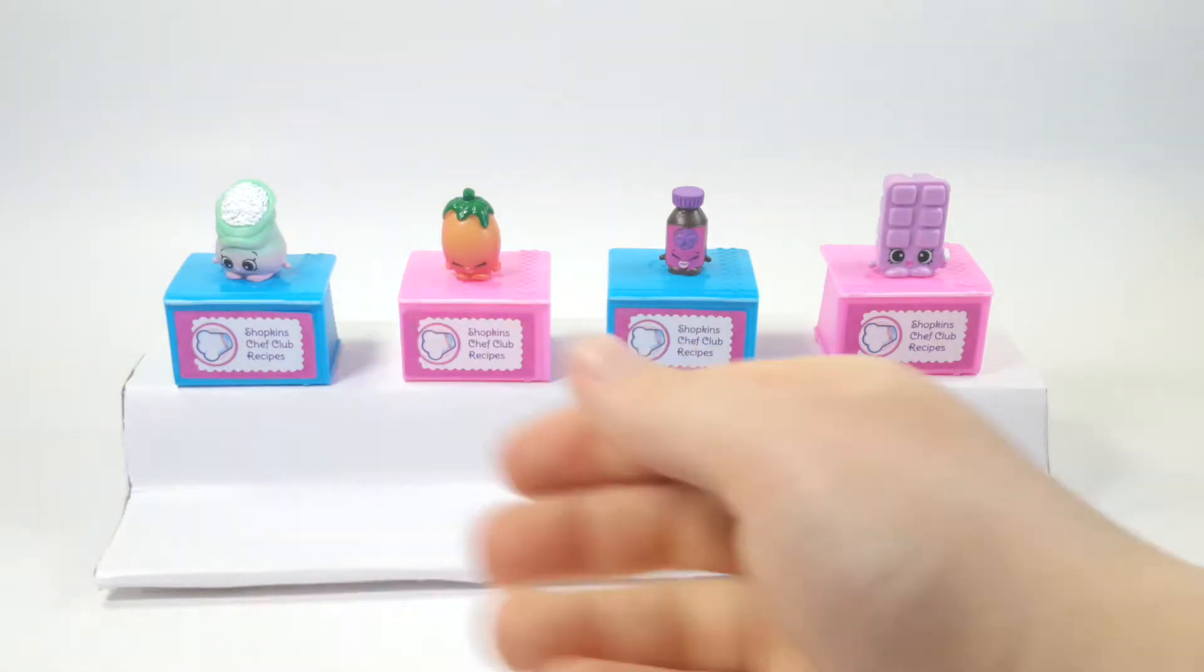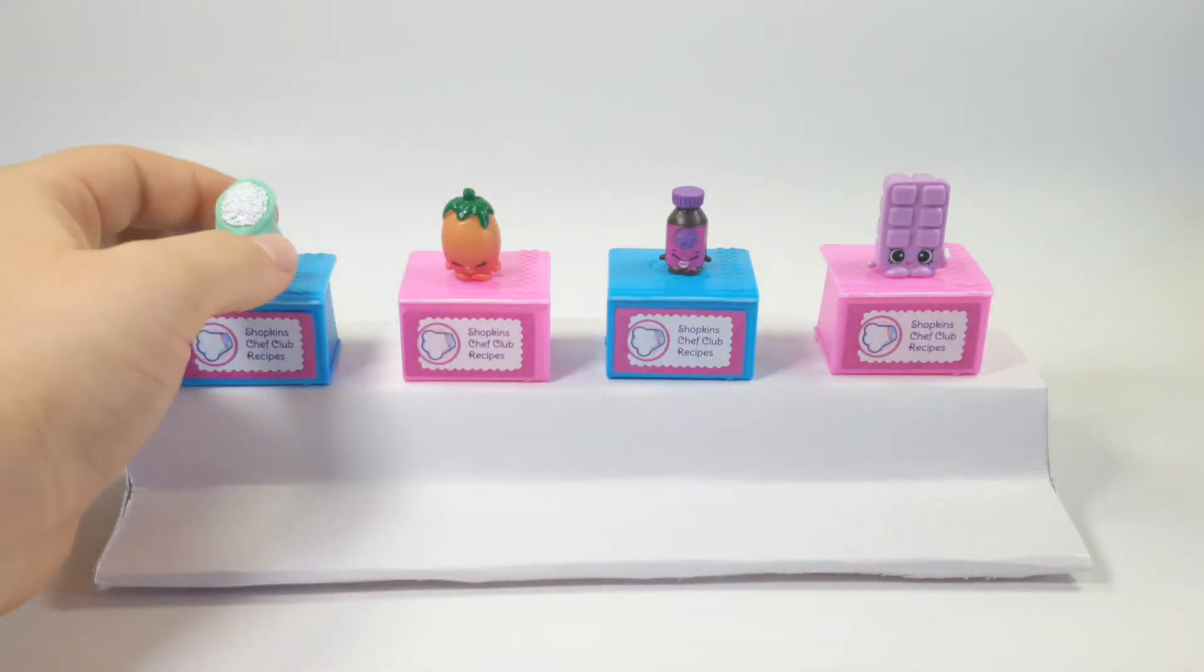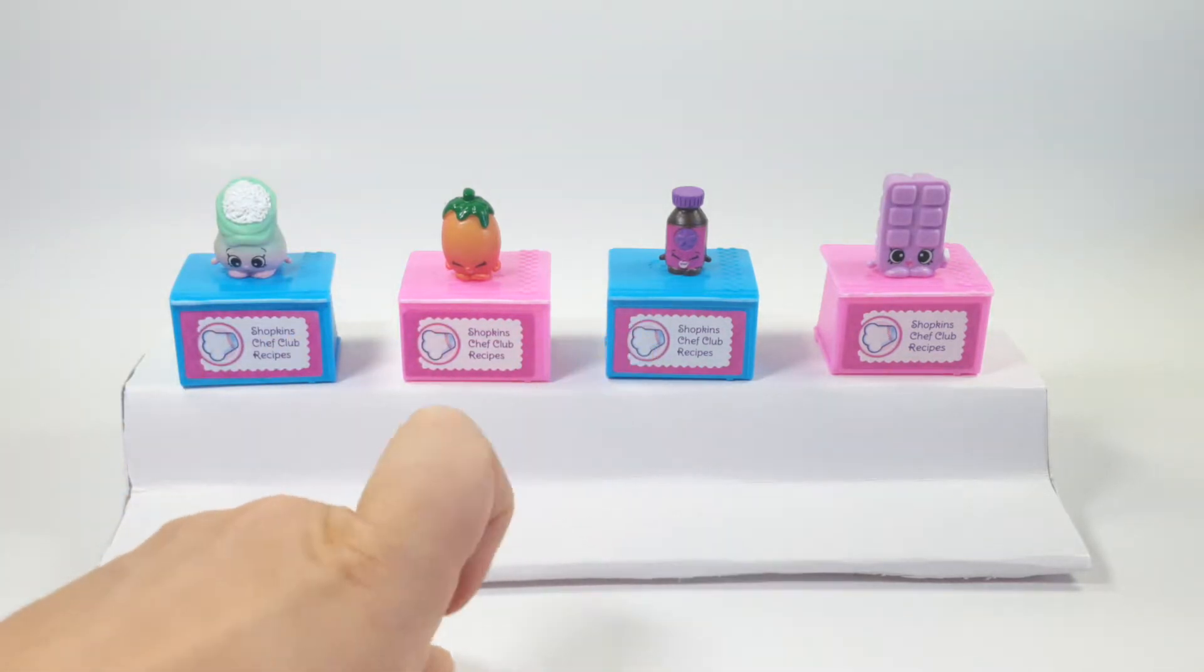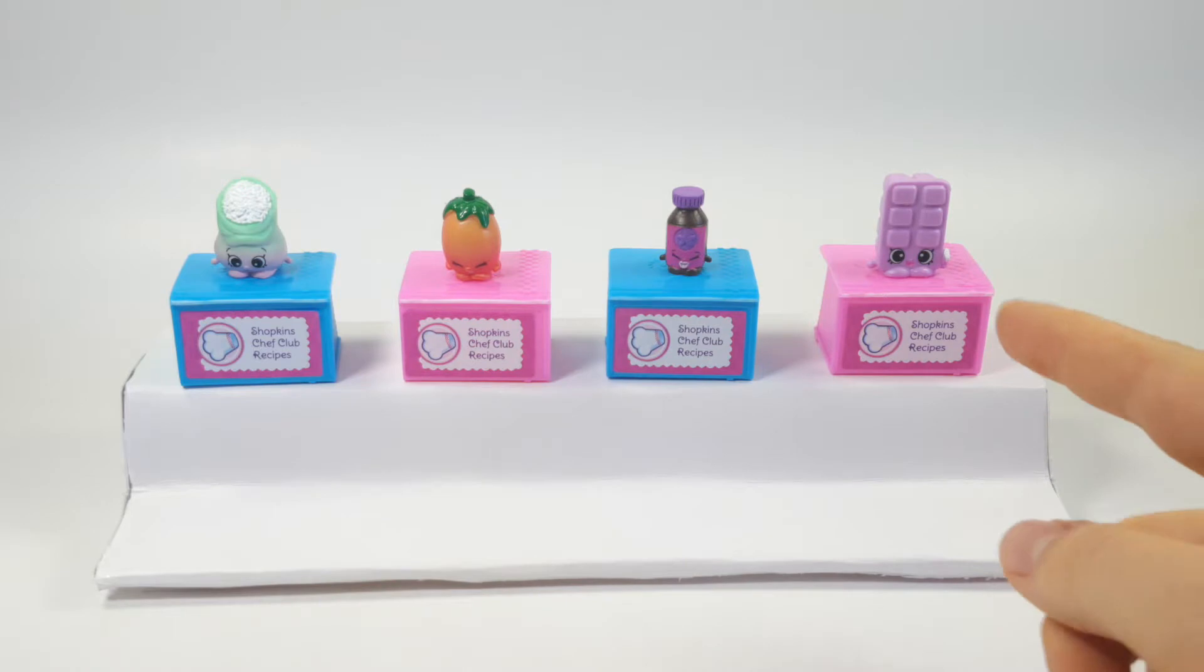So I'm going to show you guys all the Shopkins that we got. These are all the Shopkins that we got. We have jasmine rice, Roma tomato, Vicky vanilla, and blocky ice cube. Couldn't remember the name for a second.